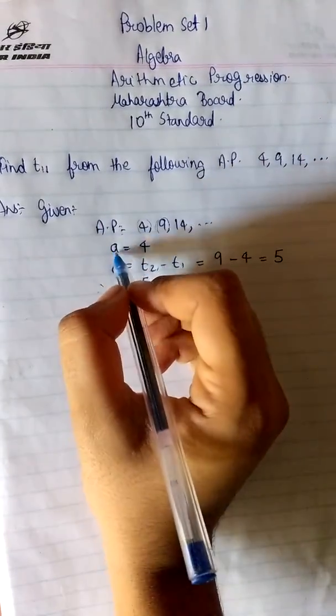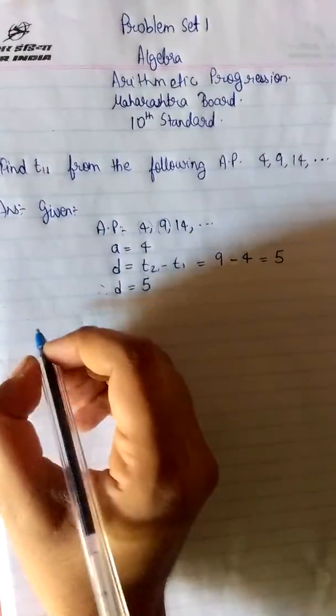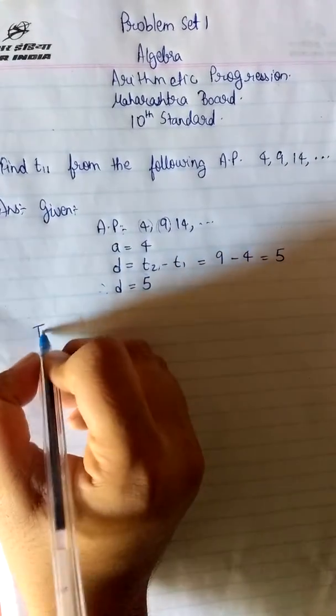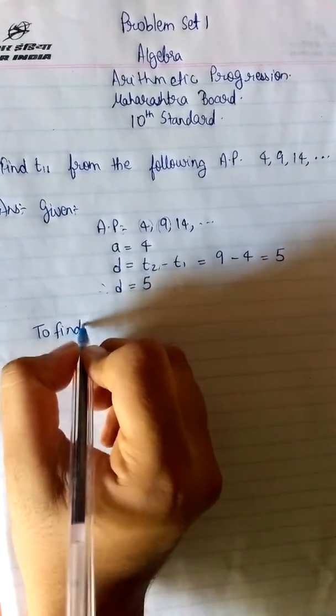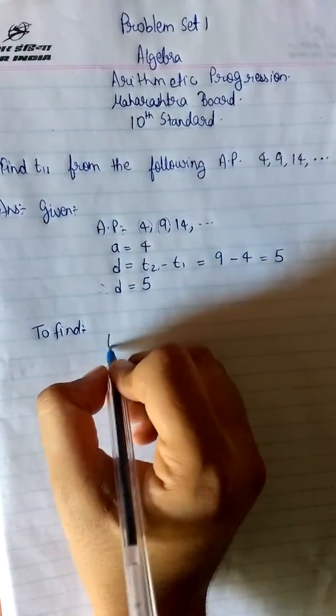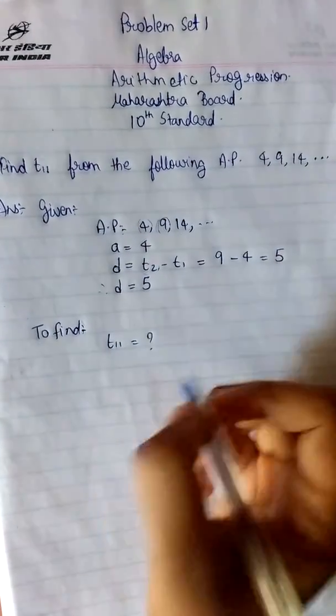Here we got the value of A and D when the AP is given. This is the case in all the APs. Now let's see what we are supposed to find. We are supposed to find the value of T11 as stated in the question. So T11 is equal to question mark.